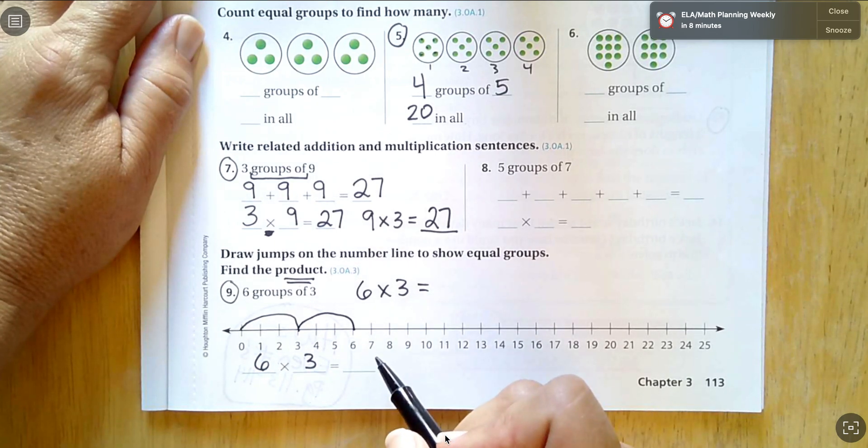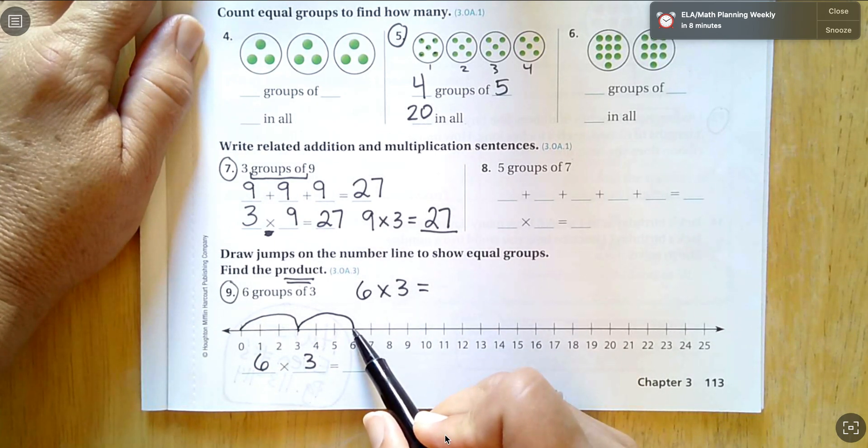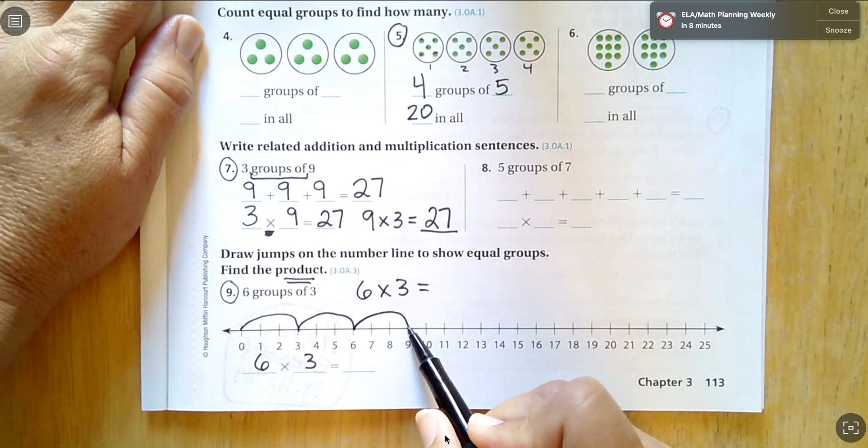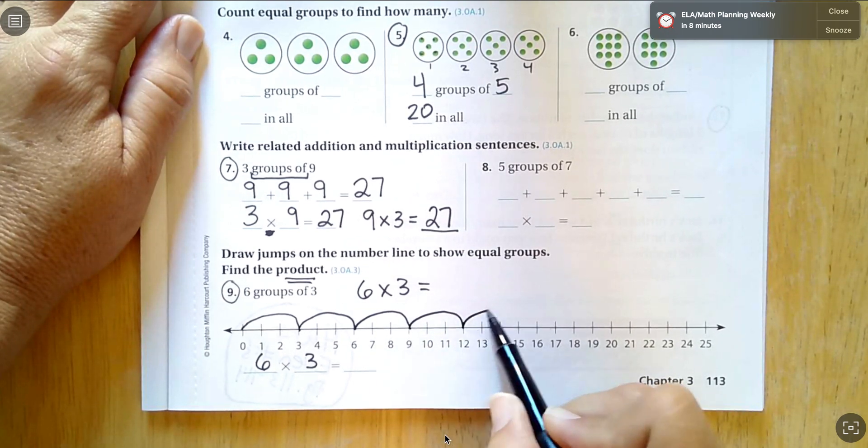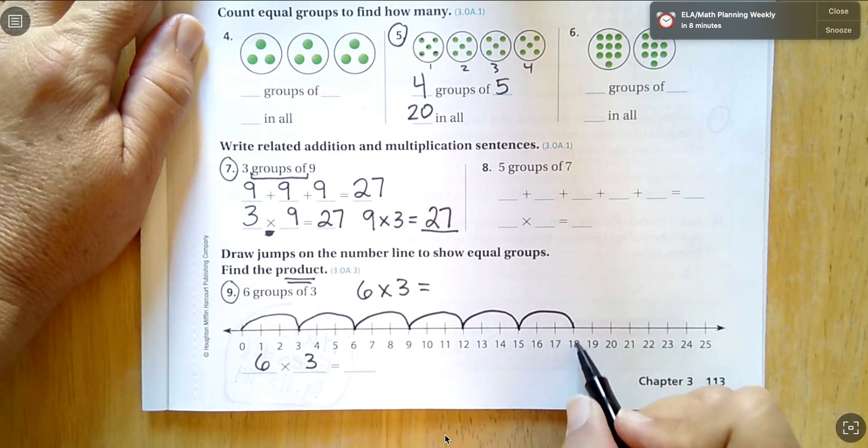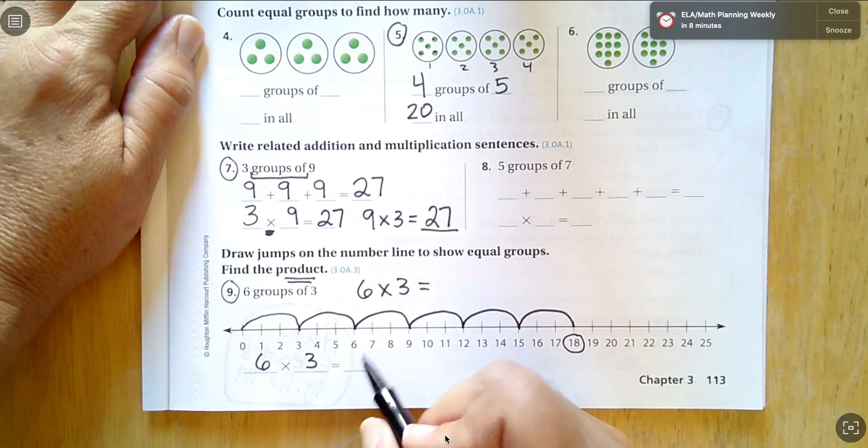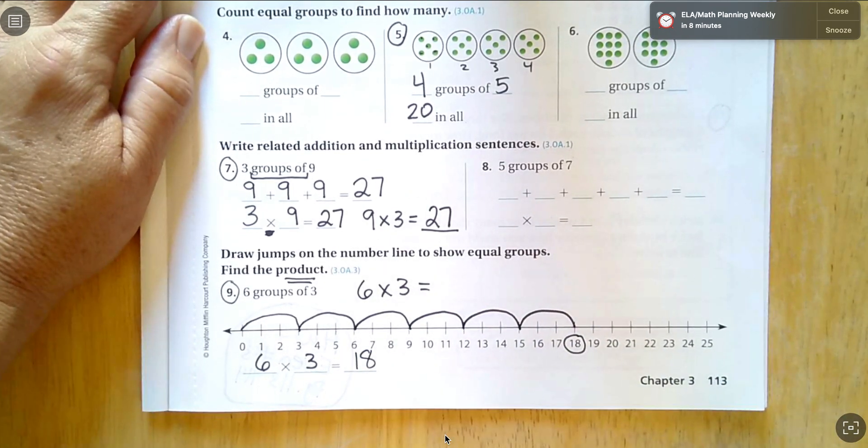So three, six, I'm doing six groups of three. One, two jumps, three jumps, four jumps, five jumps, six jumps. Six jumps of three gets me to 18.